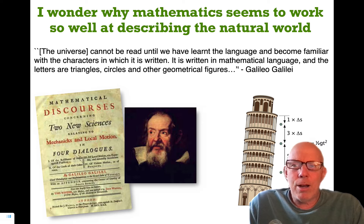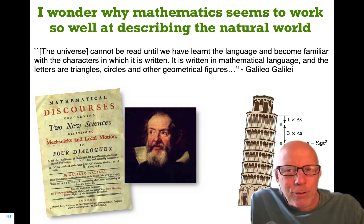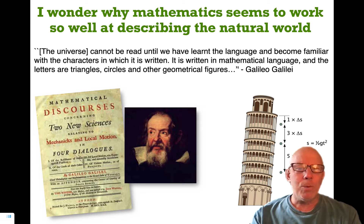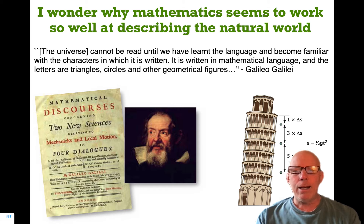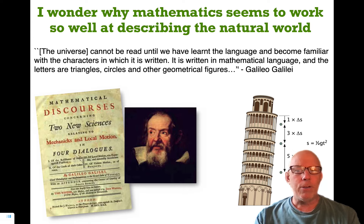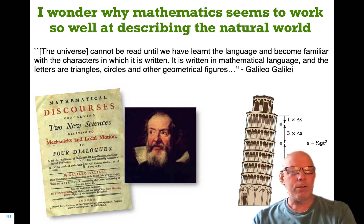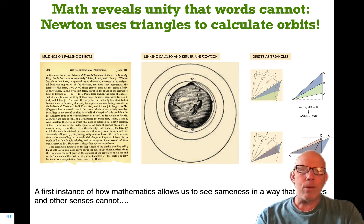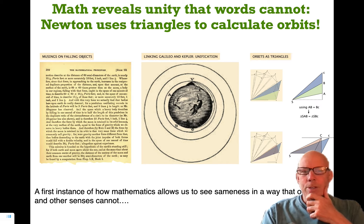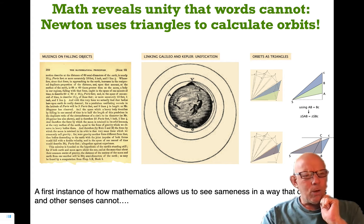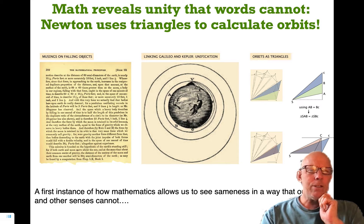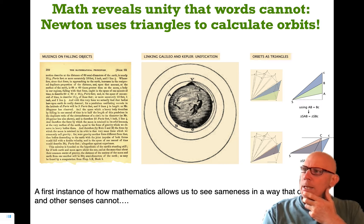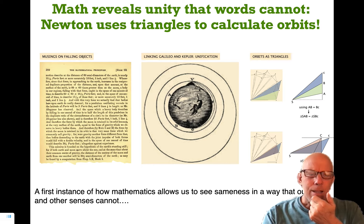I wonder why mathematics seems to work so well at describing the natural world. Galileo was so impressed as he thought about falling bodies and projectile motion that he made this remark: the universe cannot be read until we have learned the language and become familiar with the characters in which it is written. It is written in mathematical language, and the letters are triangles, circles, and other geometrical figures. Mathematics is so incredibly powerful.